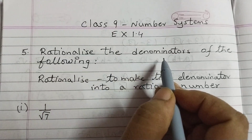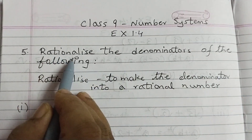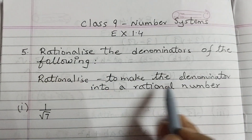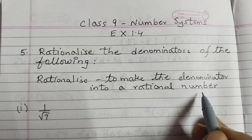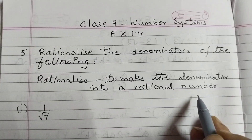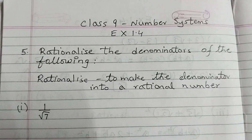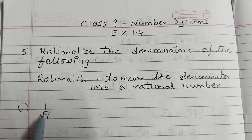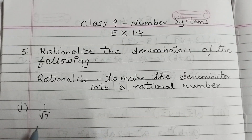Rationalize the denominators of the following. Rationalize means to make the denominator into a rational number. In simple words, to remove the under root sign. The first one is 1 over under root 7, and we need to remove this under root sign — that is called rationalization.